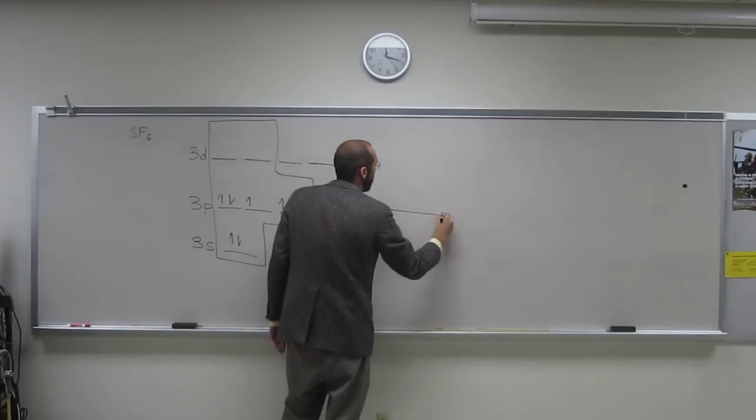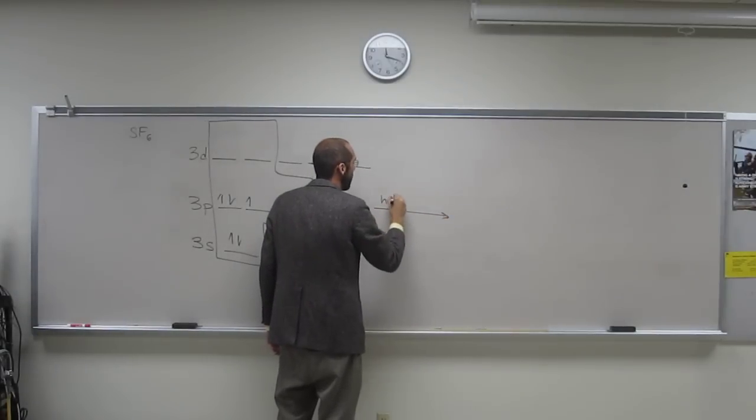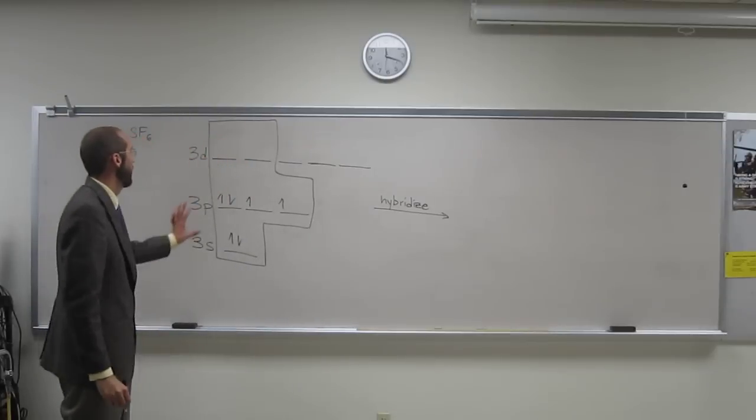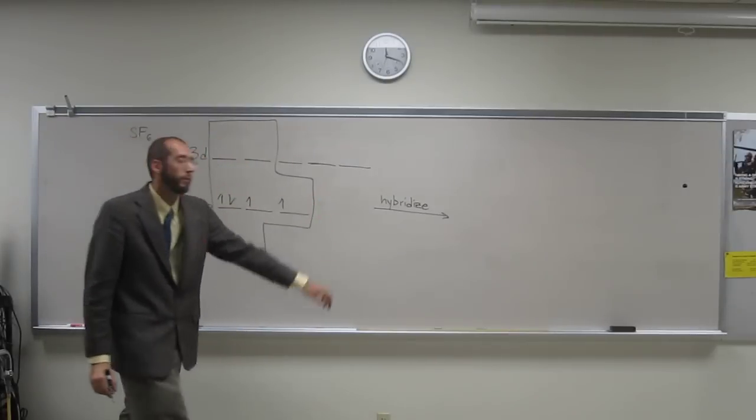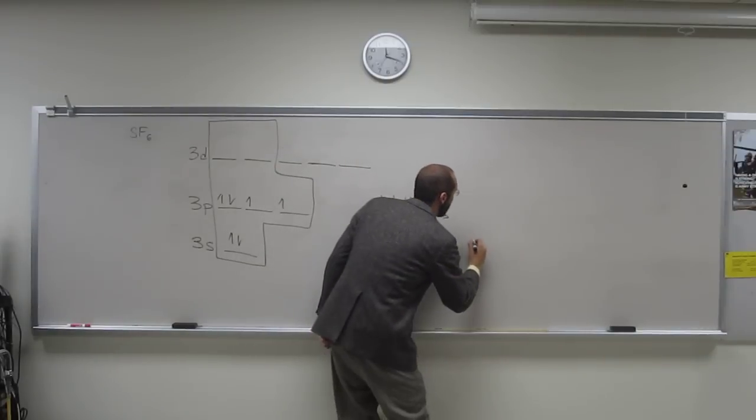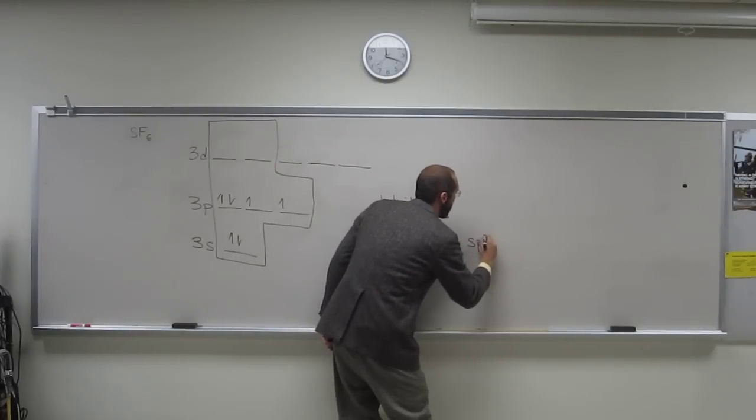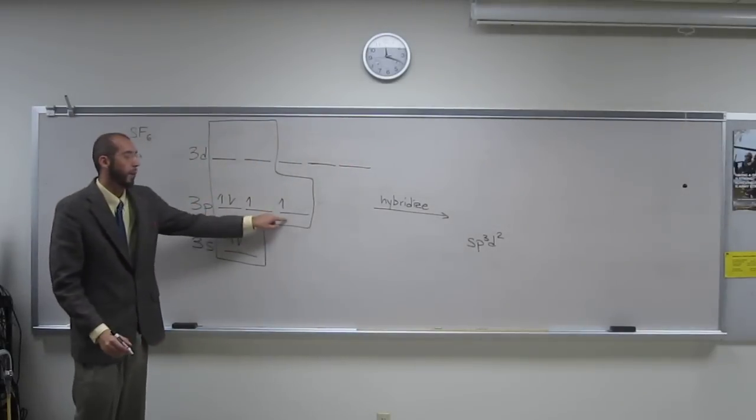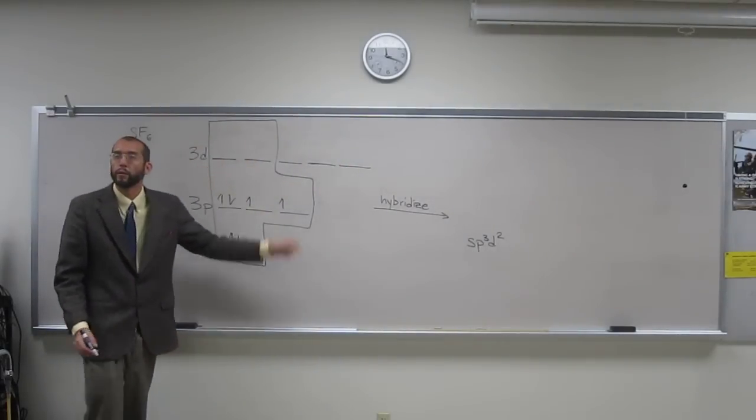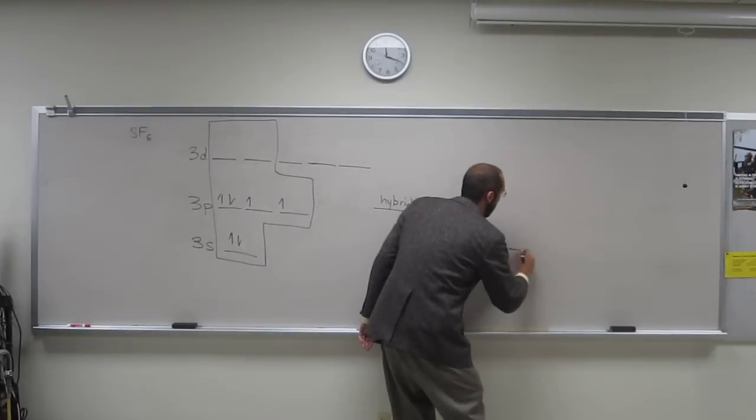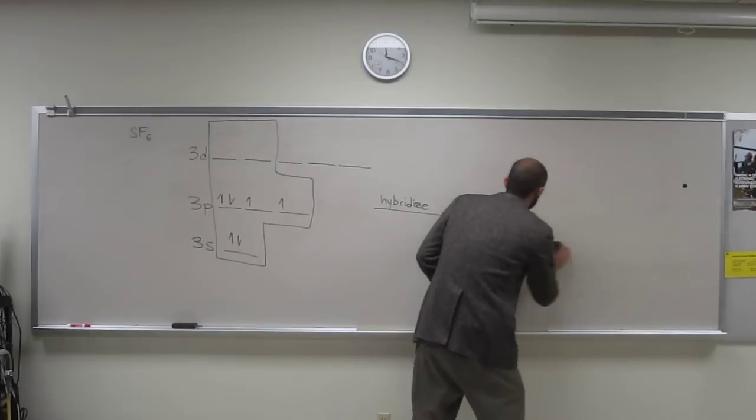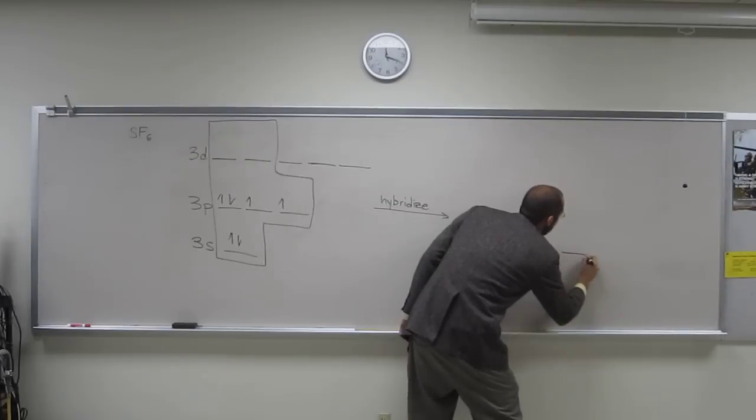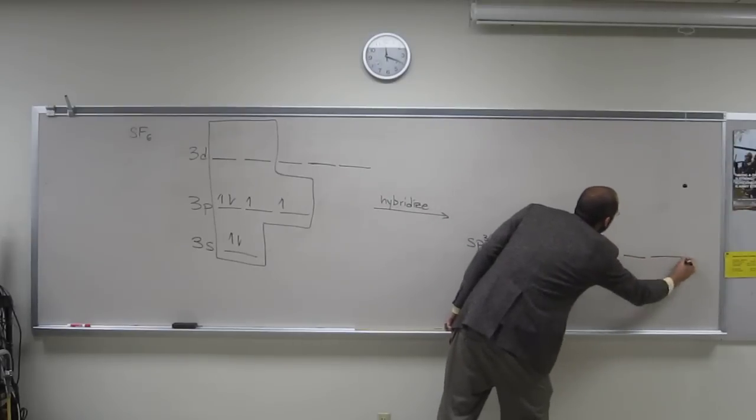And so we're going to throw those into the blender and hybridize them. So six in, six out. What are these orbitals called? sp3d2. So it's just s, p 1, 2, 3, d 1, 2. One, two, three, four, five, six, like that.